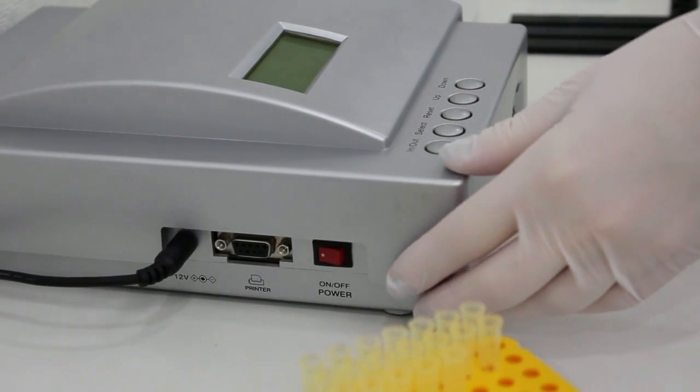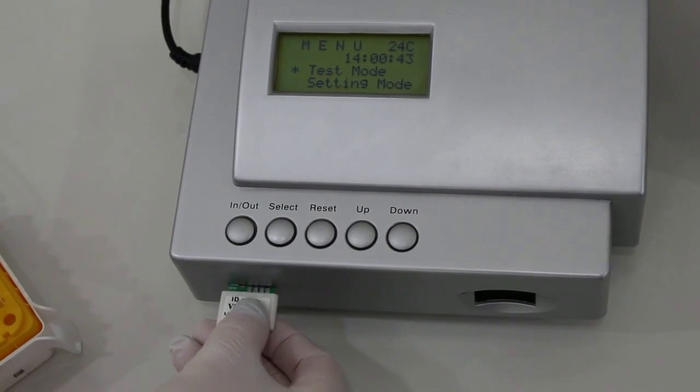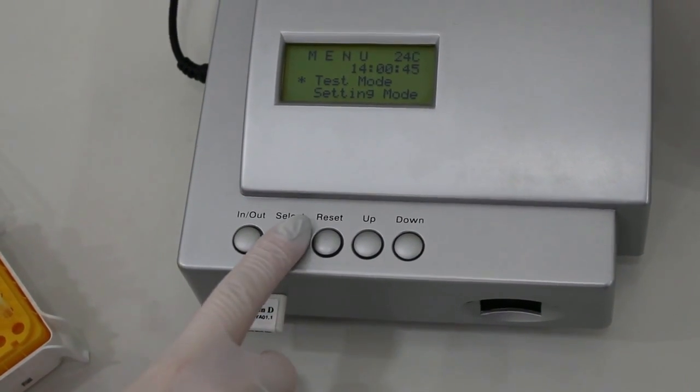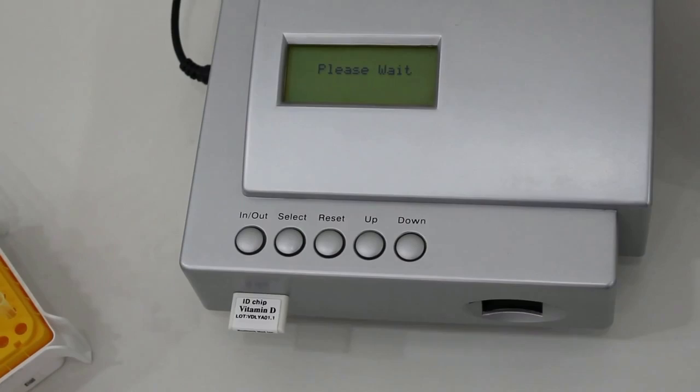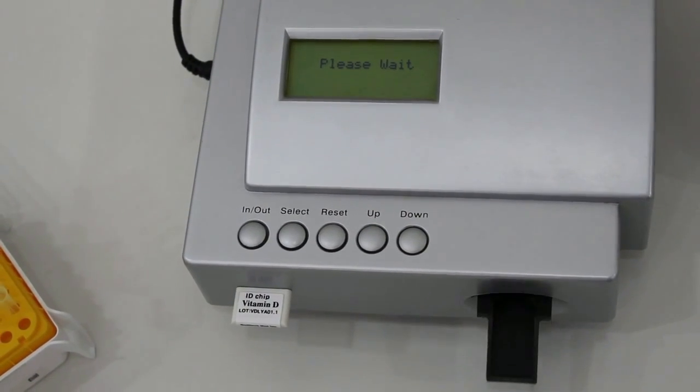Turn on the iCHROMA reader. Insert the ID chip into the ID chip port. Press the select button and the cartridge holder should slide out.